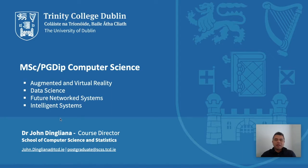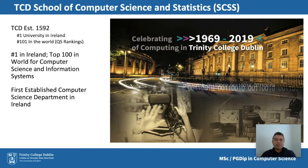An introduction to the School of Computer Science and Statistics, where the course is hosted. This is one of the largest schools in Trinity College Dublin, and it was formed over 10 years ago with the merging of the Department of Statistics and the Department of Computer Science, which last year celebrated its 50th birthday. This was one of the first computer science departments in Ireland, actually part of the Faculty of Engineering at the time. We were also the first to set up a postgraduate course — a master's in computer applications — shortly after the department was founded.